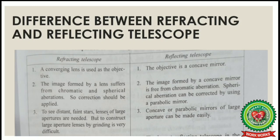Correction must be applied to the refracting telescope, but in the case of a reflecting telescope, the image formed by the concave mirror is free from chromatic aberration. Spherical aberration can be corrected by using a parabolic mirror. To see distant faint objects, lenses of large apertures are needed, but constructing these lenses is very difficult because grinding them is a very difficult task.